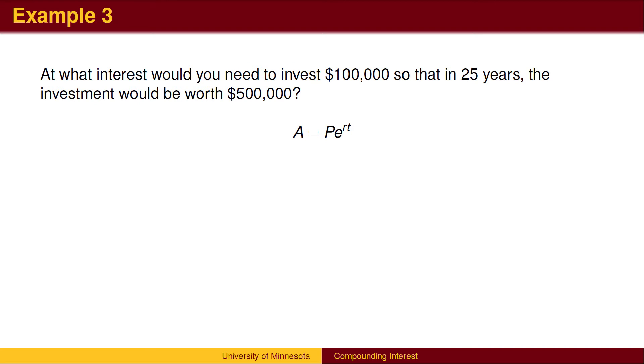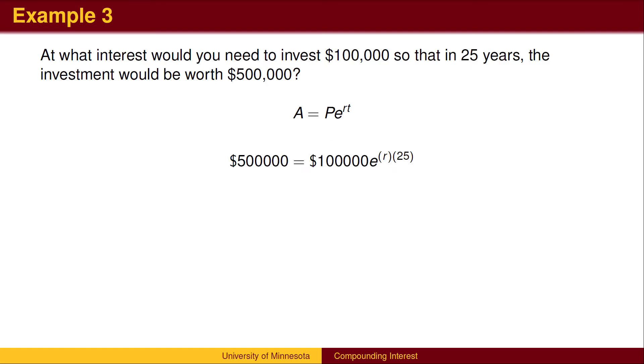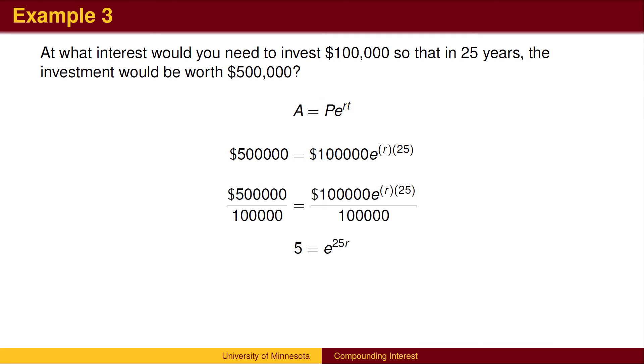Example 3. At what interest would you need to invest $100,000 so that in 25 years, the investment would be worth $500,000? Here, we plug in the values for A, P, and T. Divide both sides by $100,000. The key fact is that we want our investment to grow until it is 5 times the principal.